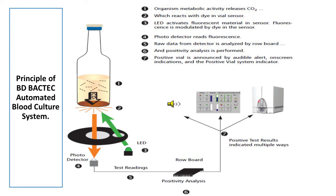A dye in the sensor at the bottom of the culture bottles reacts with CO2, modulating the amount of light absorbed by a fluorescent material in the sensor. The instrument's photo detectors measure the level of fluorescence, which corresponds to the amount of CO2 released by the organisms. The measurement is then interpreted by the system according to pre-programmed positivity algorithms.